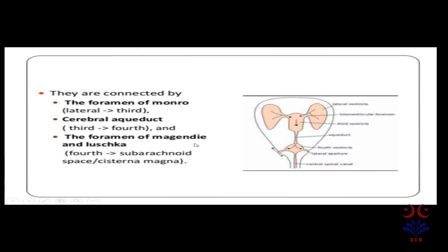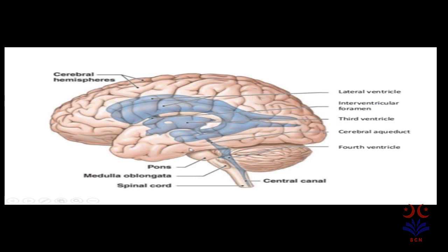These foramina are the foramen of Magendie and Luschka. In another picture we again see all the ventricles — two lateral ventricles, the third ventricle, and the fourth ventricle — with the interventricular foramen between lateral and third, and the cerebral aqueduct between third and fourth. Below the fourth ventricle is the central canal in the spinal cord.